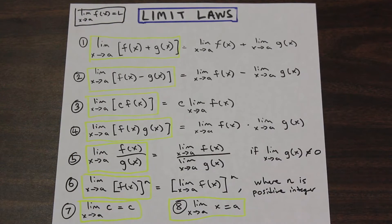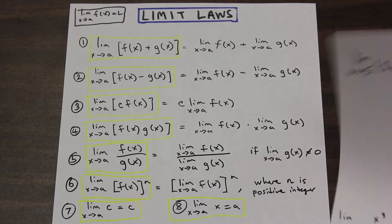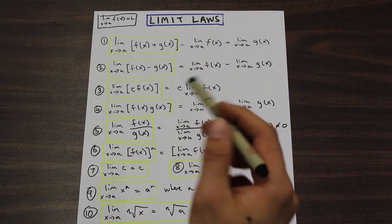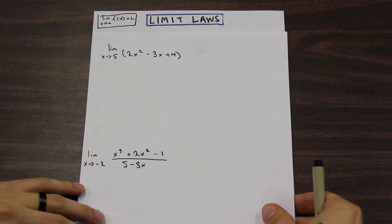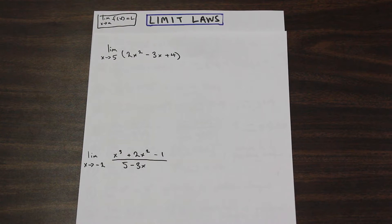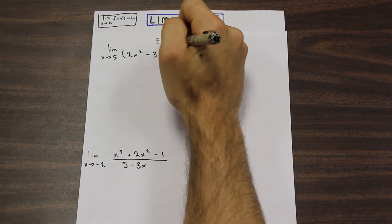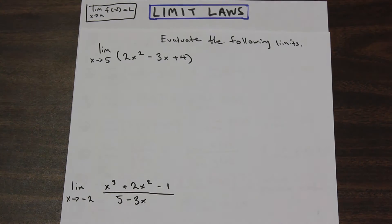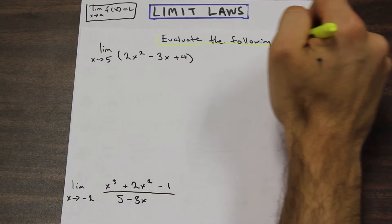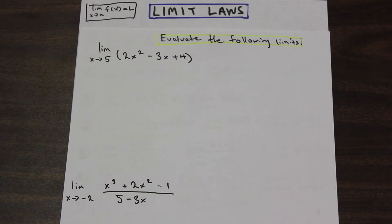So with that being said, let's take a look at two problems and we're going to use these limit laws to evaluate them. The question asks us to evaluate the following limits. Looking at the first one, we have the limit as x approaches five of 2x squared minus 3x plus 4. So which laws do we need to use to evaluate this?